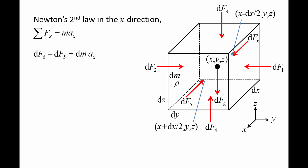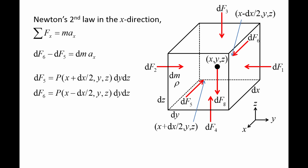Recalling that pressure is force per area, we can rewrite the pressure force df5 as the pressure at point x plus half dx, y, z, times the area dy dz. The pressure force df6 is the pressure at point x minus half dx, y, z, times the area dy dz.